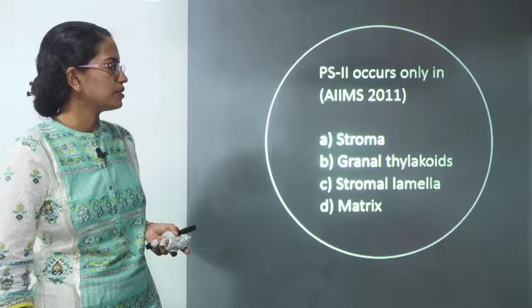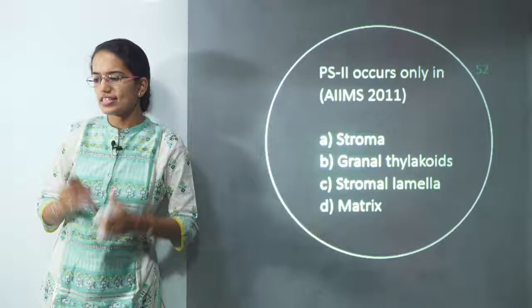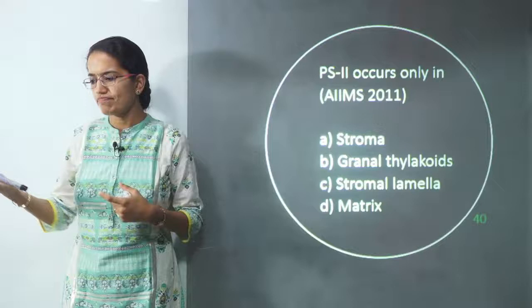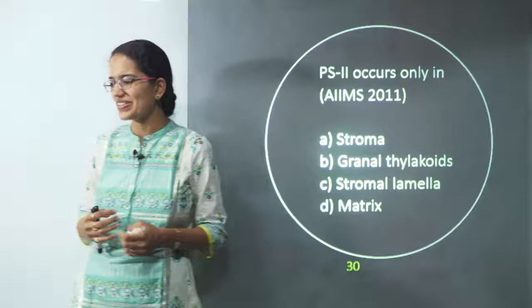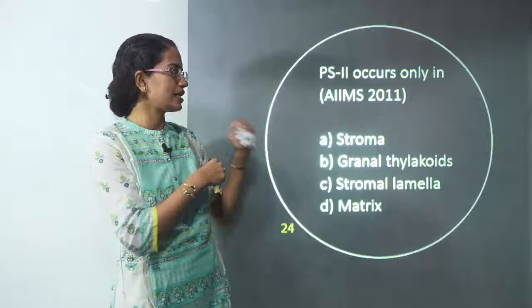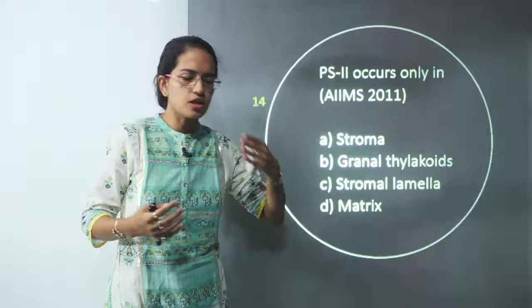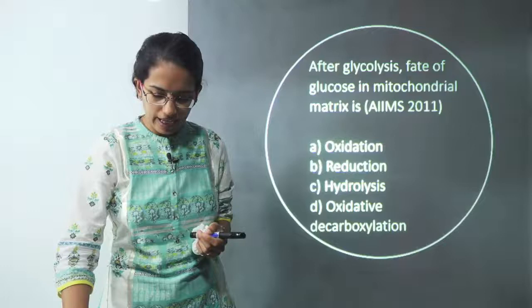The next question is on Photosystem 2 (PS2). Granal thylakoids are the area where Photosystem 2 takes place. It is usually located in plants, algae, and cyanobacteria, and is the process of light-dependent reactions of oxygenic photosynthesis. So B — granal thylakoids — is the correct answer, answered by Sangha.